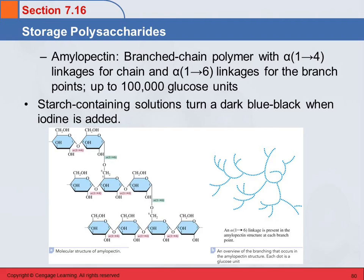Amylose is straight chain and amylopectin is branched — that's really the only difference between them. The branched amylopectin can have up to 100,000 glucose units, so it is much larger. Both amylose and amylopectin can form a complex with iodine. These large molecules actually wrap around the iodine, and that results in a really dark blue-black color. So that's a test for starch.